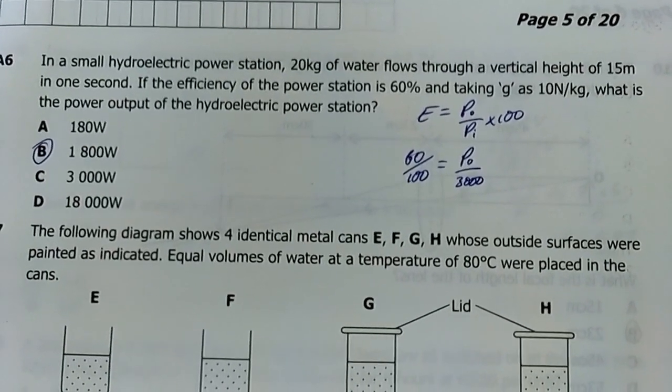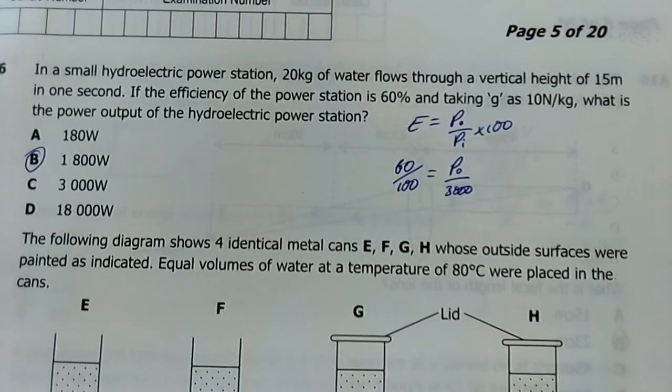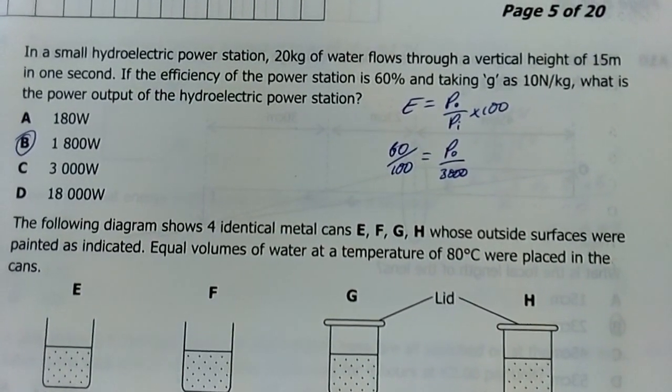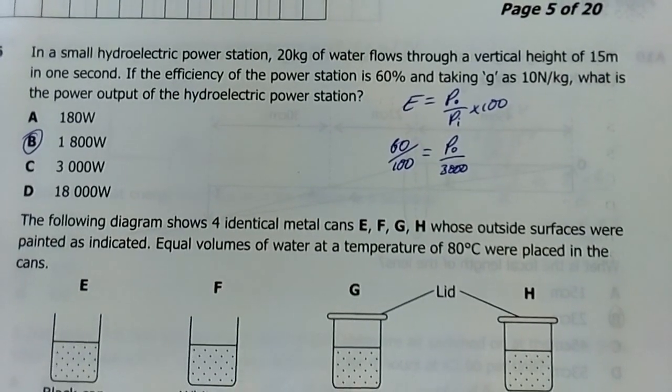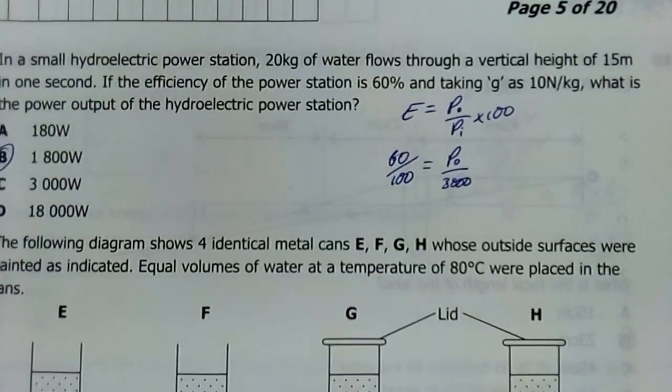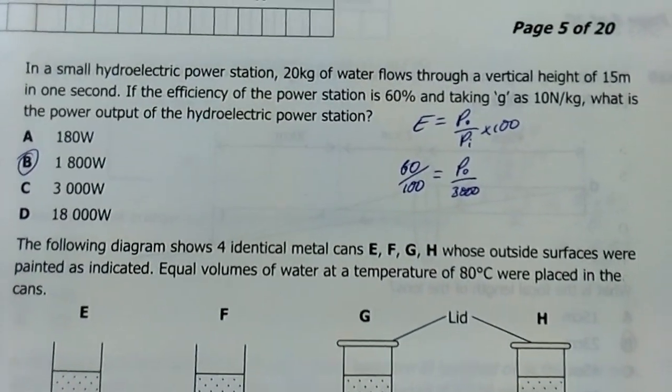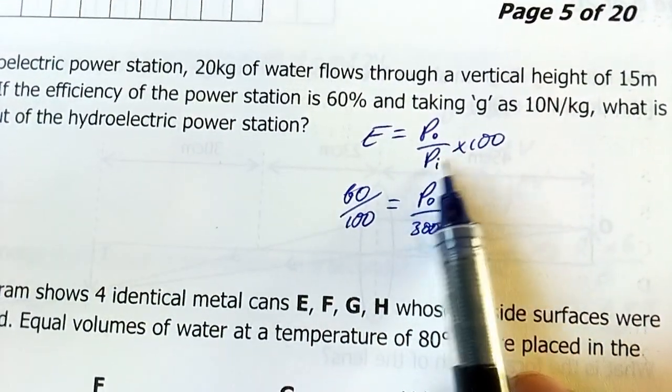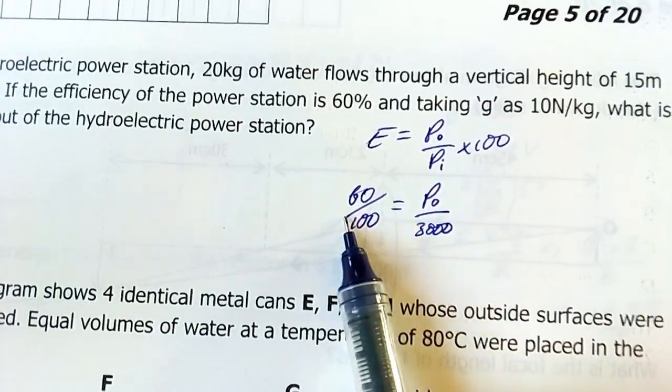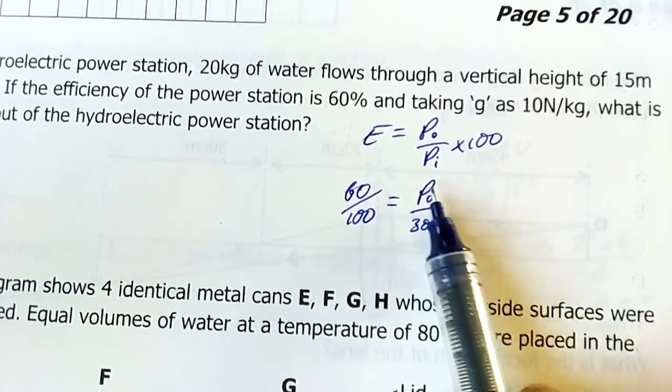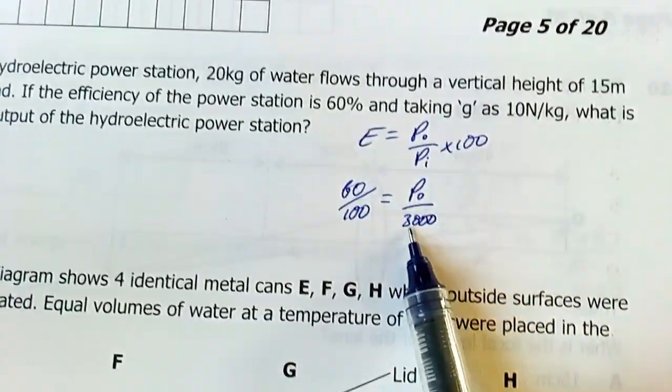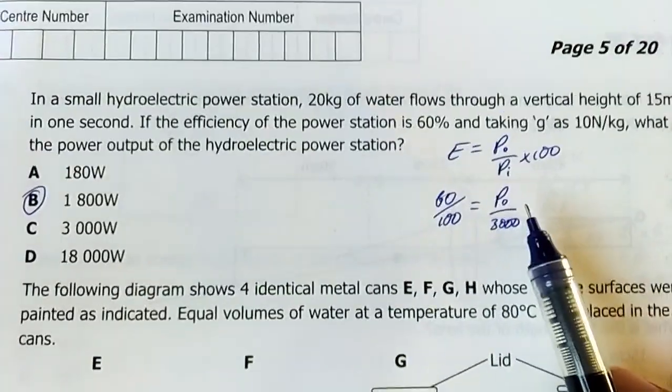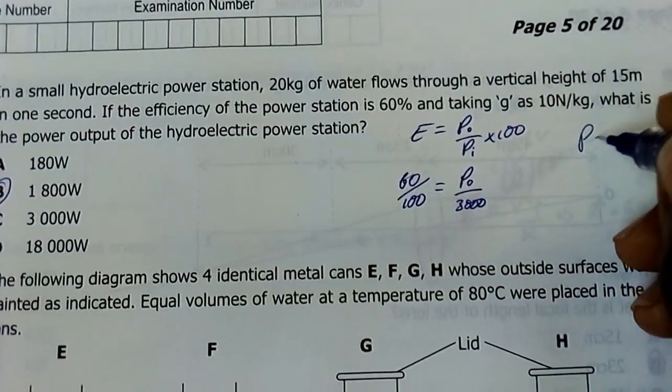Number six: In a small hydroelectric power station, 20 grams of water flows through a vertical height of 15 meters in one second. If the efficiency of the power station is 60% and taking g as 10 newtons per kg, what is the power output of the electric power station? My answer was 1800 watts. Efficiency equals power output over power input times 100. My efficiency is 60 over 100. Power output I don't know - that's what they're asking for. Power input I can calculate from what I've been given.